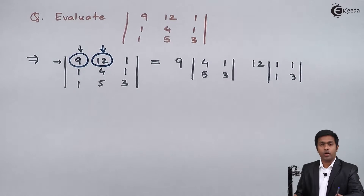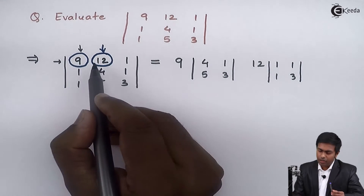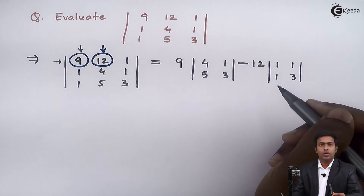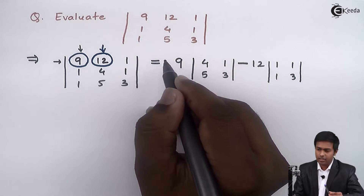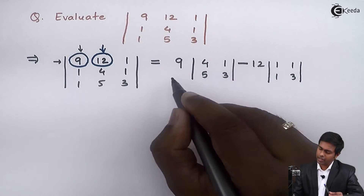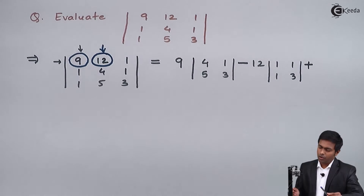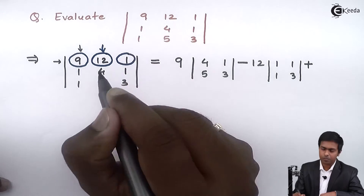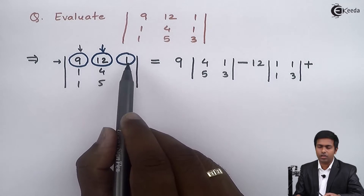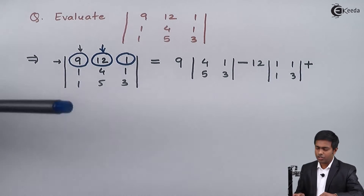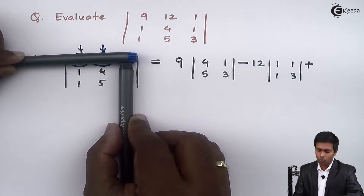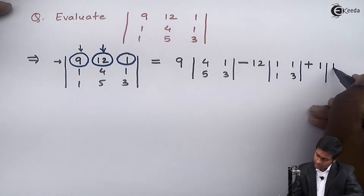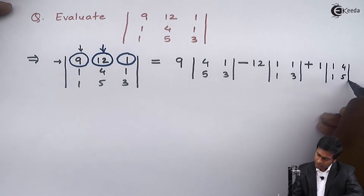Remember that with the element of the middle column — that is the second term — we always give a negative sign. So the first term has a positive sign, the second term has a negative sign, and the third term has a positive sign again. For the third term we consider the third element, which is 1. This 1 lies in the first row and third column, so we hide the first row and third column, giving us elements 1, 4 and 1, 5. We multiply 1 with the determinant of 1, 4, 1, 5.